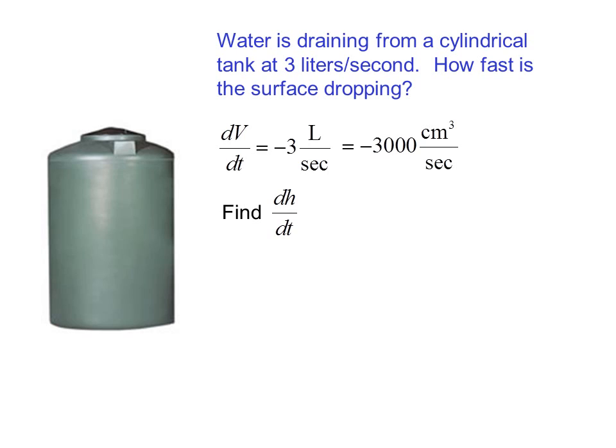We want to find dh/dt, that is the rate of change of the height. So we need an equation that relates the height and the volume. We can use V equals pi r squared h, which is the formula for the volume of a cylinder. Taking the derivative of both sides with respect to time, we get dV/dt equals pi r squared dh/dt, where r is a constant.